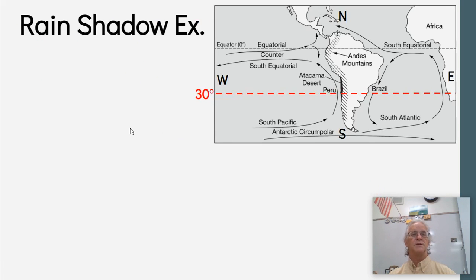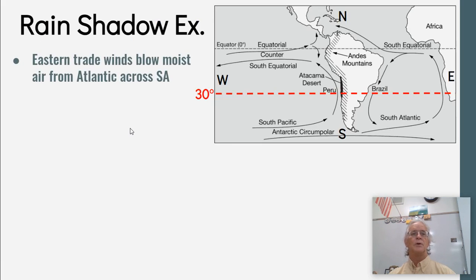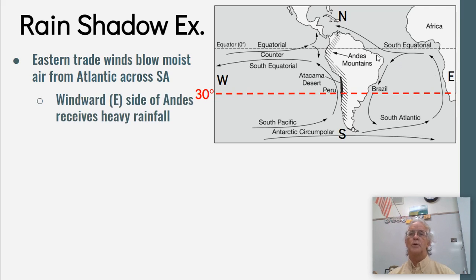Another example of a rain shadow: the eastern trade winds blow moist air from the Atlantic across South America. When that happens, the windward side of the Andes receives huge amounts of rain because it's at the equator and because of the mountains.